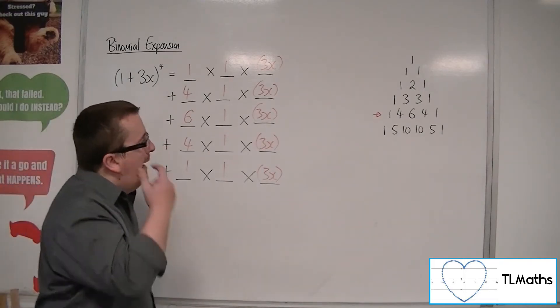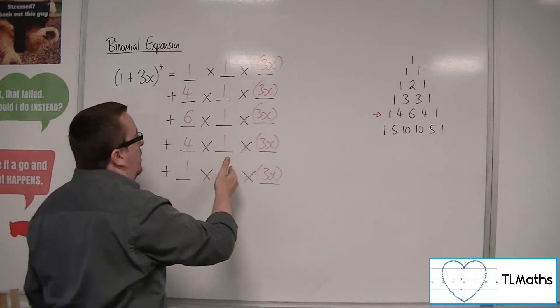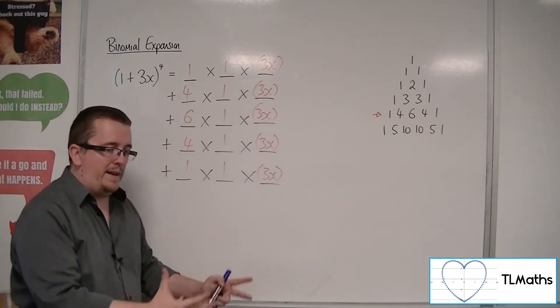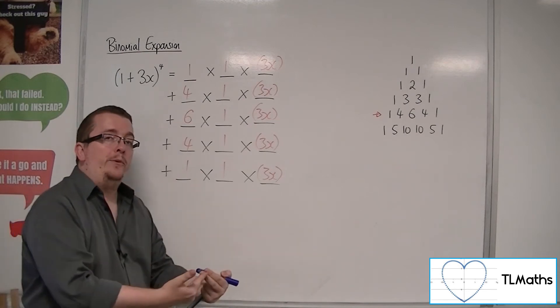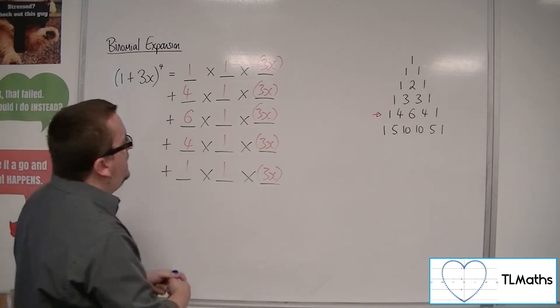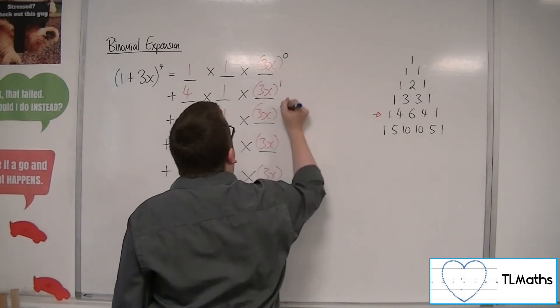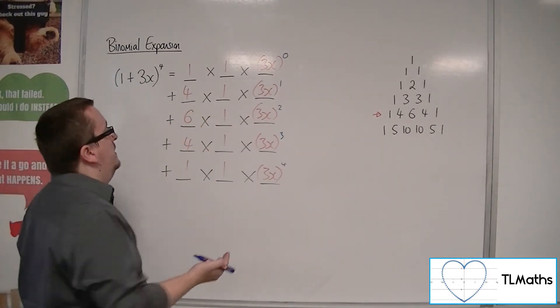Now, as for the powers, it doesn't matter if I go from 4 down to 0 in this column or 4 down to 0 in this column if I was just expanding it. If I want to write it in ascending powers of x, then it would make sense to start in this column with 0, 1, 2, 3, 4, because then I'm going to get my ascending powers of x.